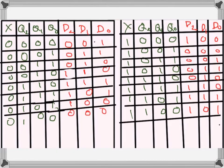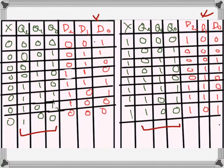I want to design a 3-bit up-down gray code counter. This is 3-bit gray code — just ignore the D inputs (the red columns) for the time being. Q2, Q1, Q0 — these three represent the 3-bit gray code. X is a control input that decides whether the counter counts up or counts down. When X equals 0, the counter counts up; when X equals 1, the counter counts down.